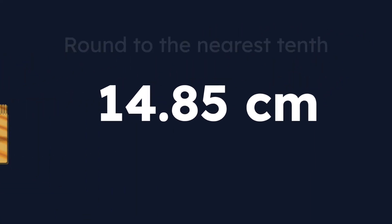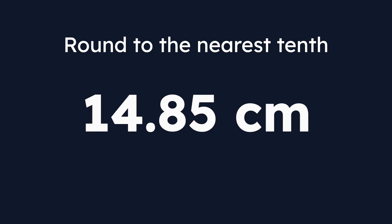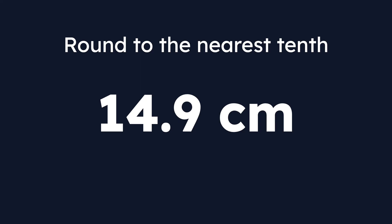If I take that number and round it to the nearest tenth, I'll follow the rules we already outlined — looking one digit past the tenths place. In this example, the eight is my tenths place, so I have to look at the number to the right of that, which is a five. Our rules say that whenever we have five or greater, we round up. So we take that five off and round the eight up to a nine, leaving us with 14.9 centimeters.